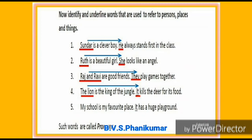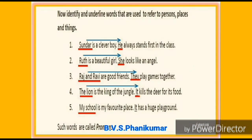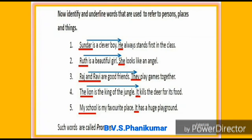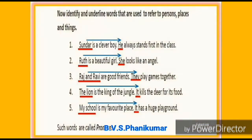Number five: My school is my favorite place. It has a huge playground. Here, my school is a place, so the pronoun 'it' is used instead of the noun 'my school'.